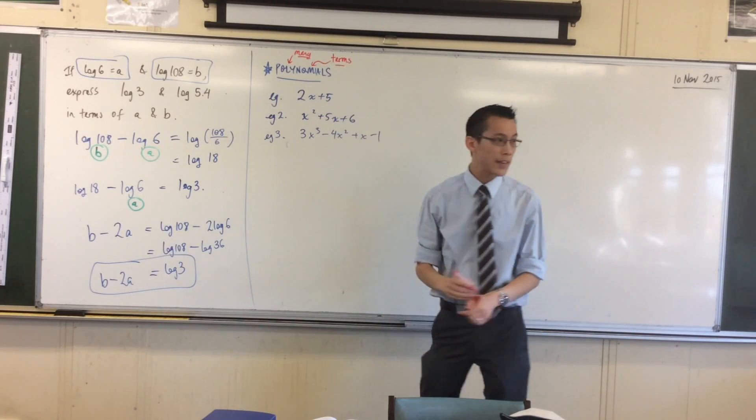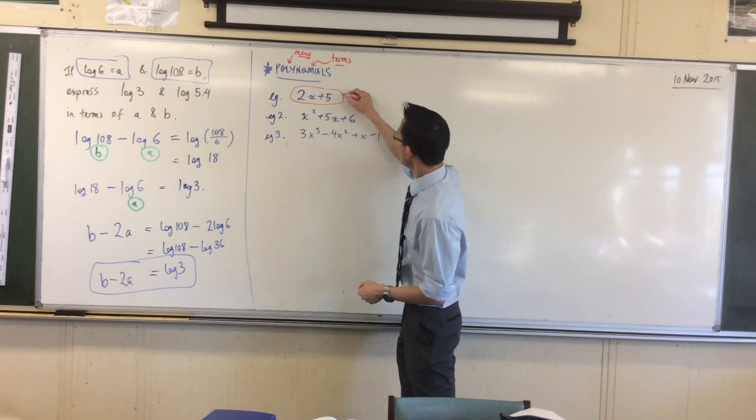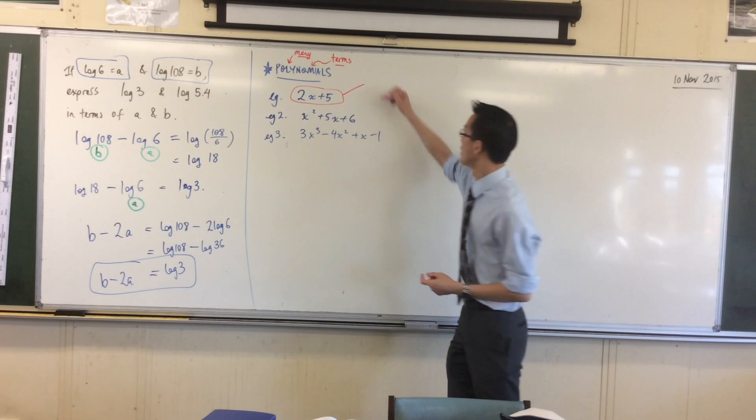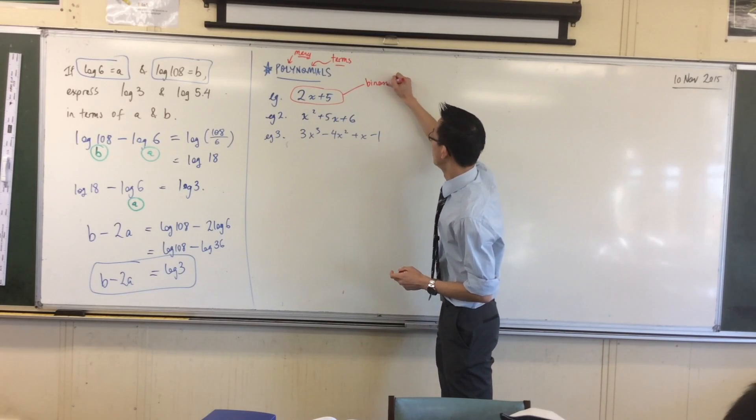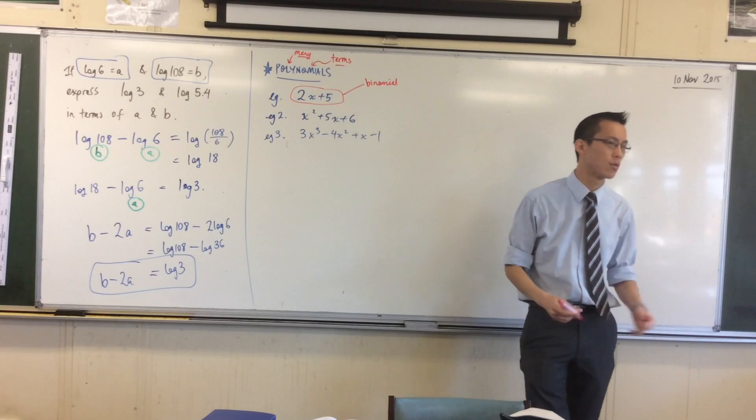There's a very specific example of polynomials which is this guy here. This here is called a binomial because it has two terms in it. This is a binomial. By extension, you'd call this a trinomial and so on.